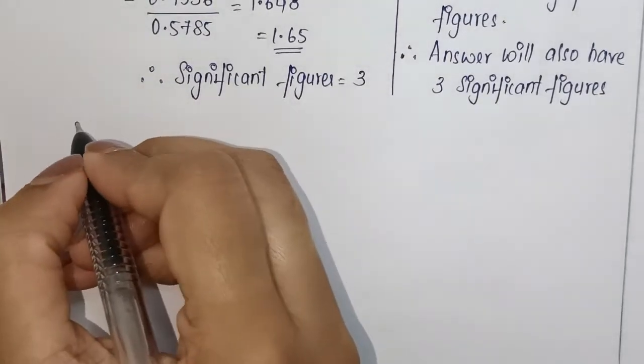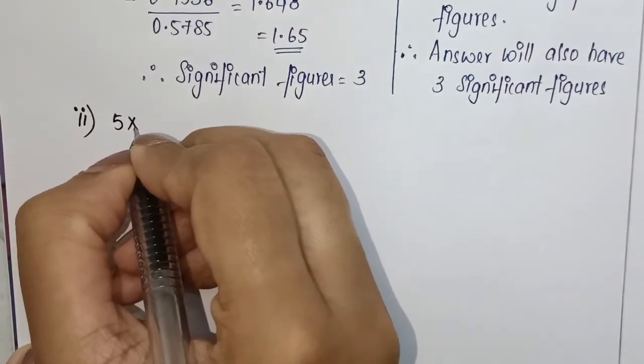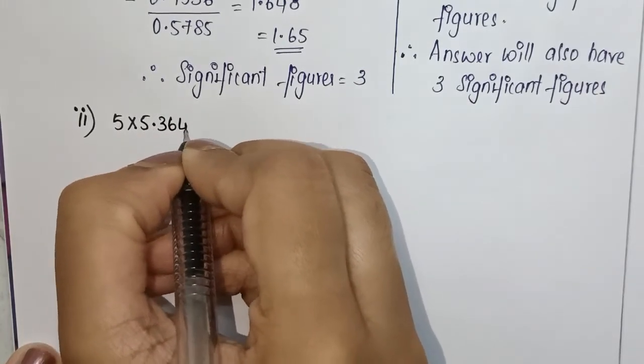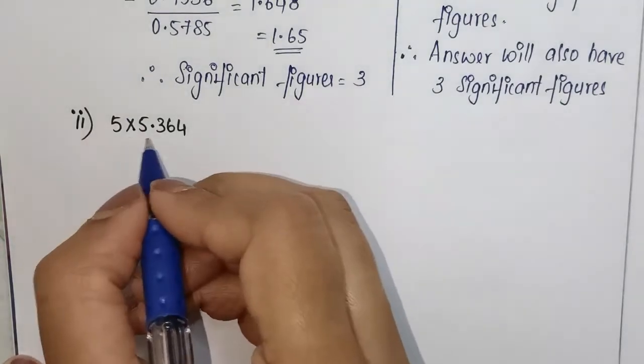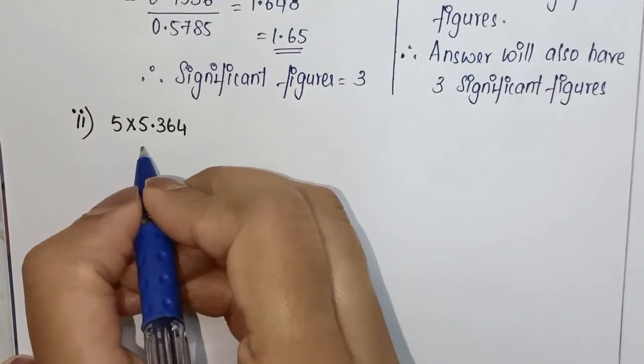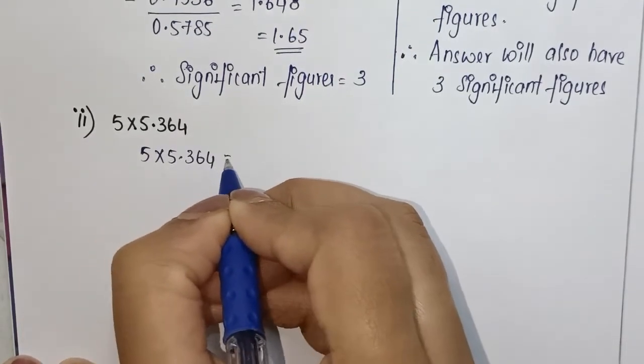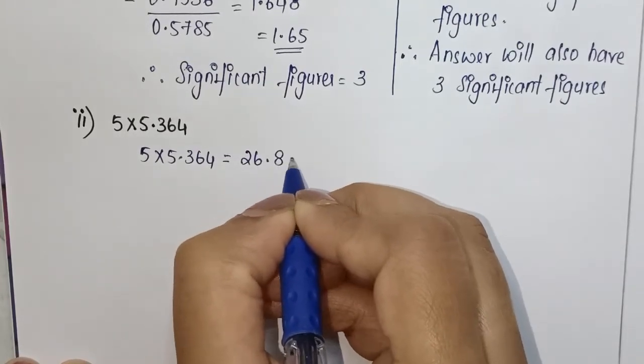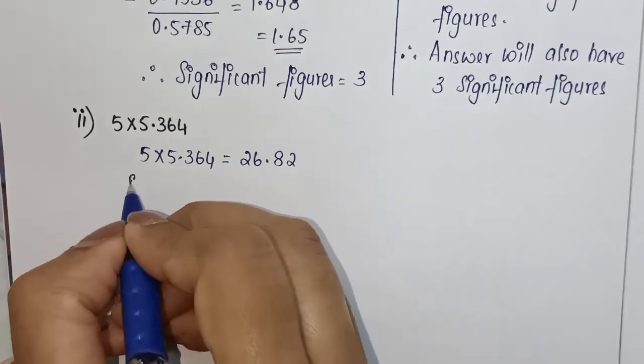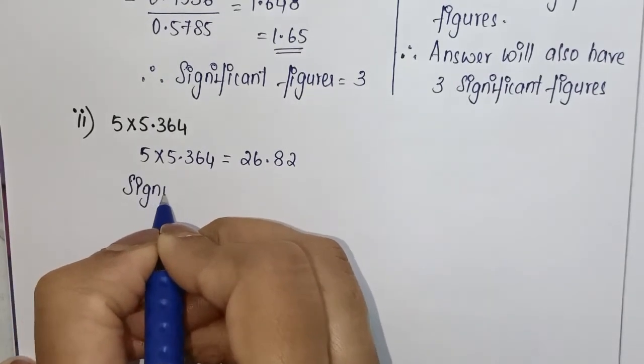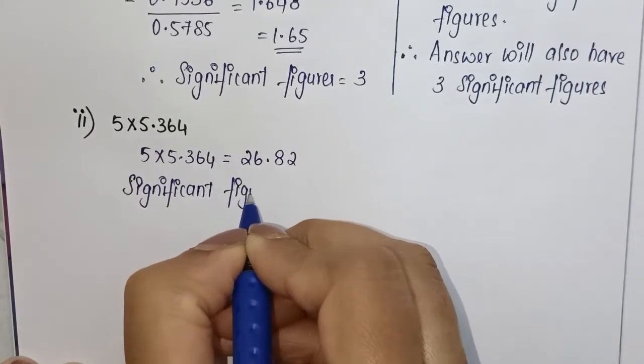The second question is 5 × 5.364, a very simple question. When we do a direct calculation, you get 5 × 5.364. By multiplying it, you will get 26.82. If you see here, all of these are non-zero digits, therefore it has four significant figures.